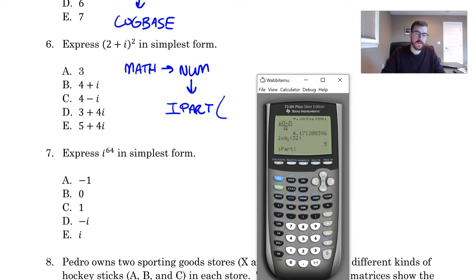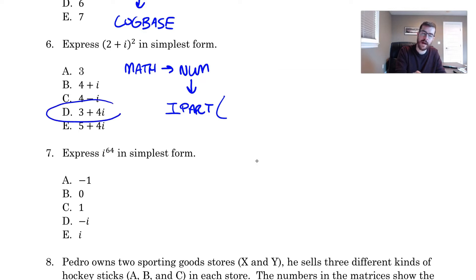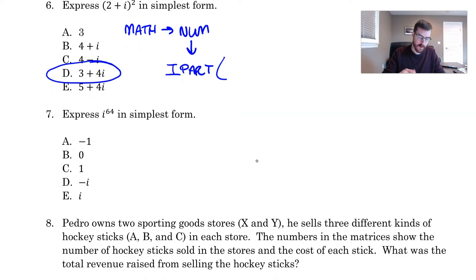So whenever you're doing anything with imaginary numbers, you want to put into this I part thing. So I'm going to hit math, go to the right to num, and you can see the third thing down is I part. I'm just going to click enter on that. Now, my expression for number six says we want to know what two plus I squared is in simplest form. Since it starts with an open parentheses, I'm going to put another open parentheses here. I'm going to type in two plus I. Now be really careful. The I button, the imaginary number, is underneath the decimal in blue. So I'm going to hit second decimal.